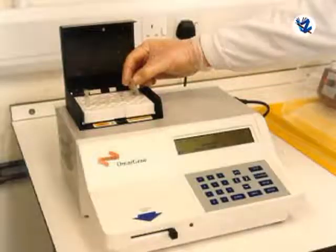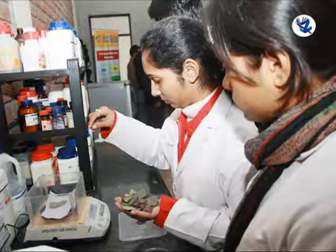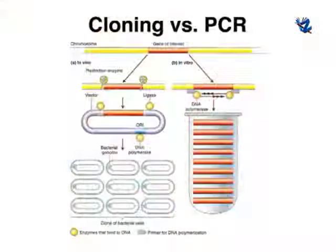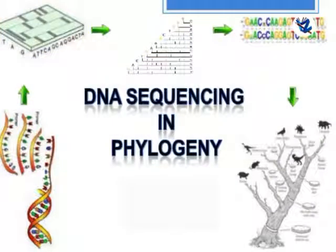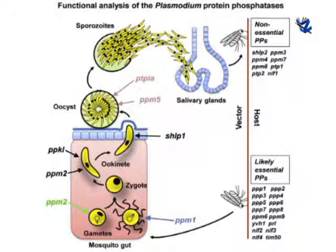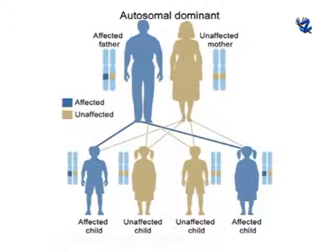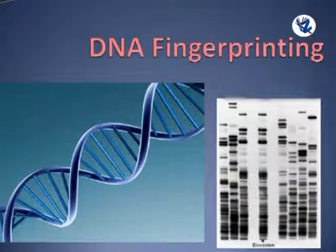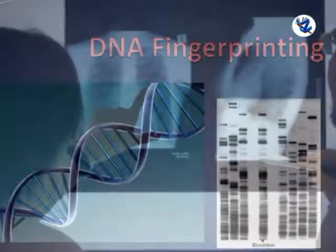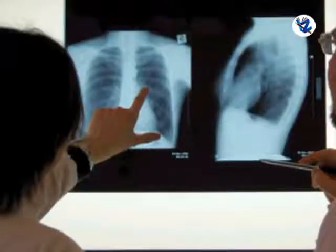PCR technique is used in medical and biological research labs for a variety of applications. It is used in DNA cloning, gene amplification, DNA-based phylogeny or functional analysis of genes, diagnosis of hereditary diseases, DNA fingerprinting used in forensic sciences and paternity testing, and diagnosis of cancer.